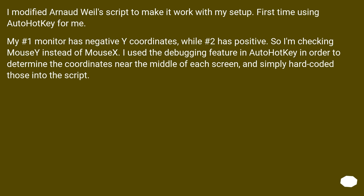I modified the script to make it work with my setup — first time using AutoHotkey for me. My number 1 monitor has negative y-coordinates while number 2 has positive, so I'm checking mouseY instead of mouseX. I used the debugging feature in AutoHotkey to determine the coordinates near the middle of each screen and simply hardcoded those into the script.